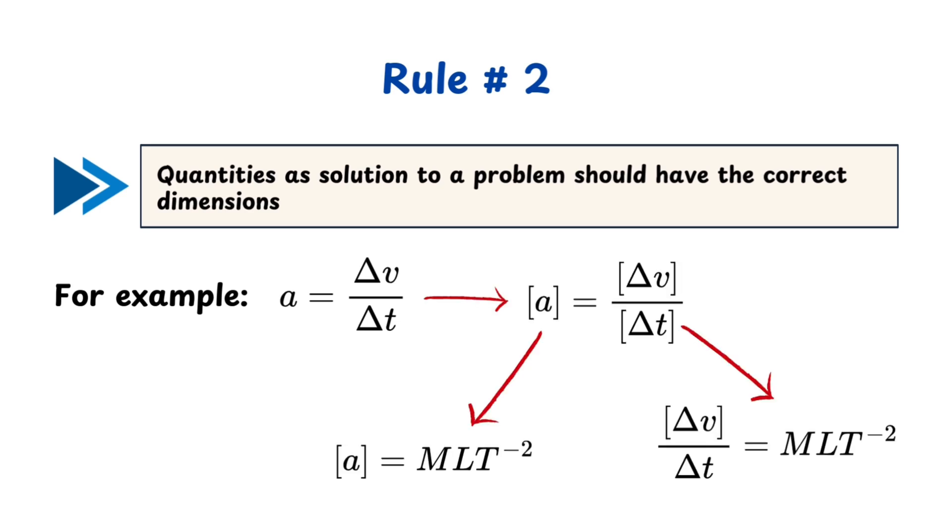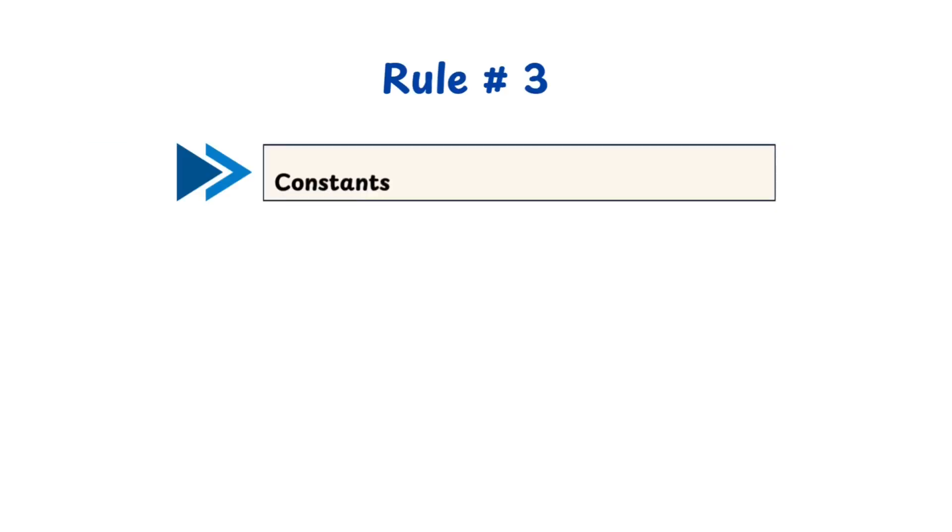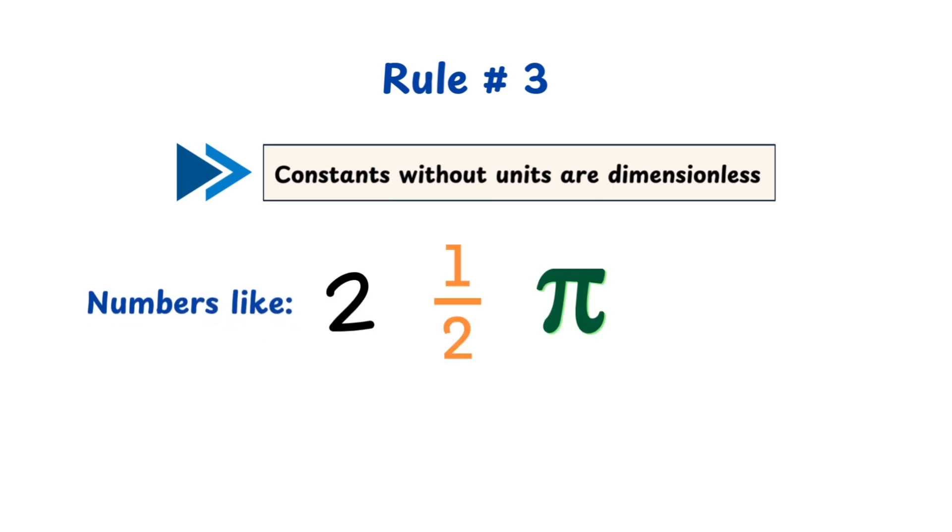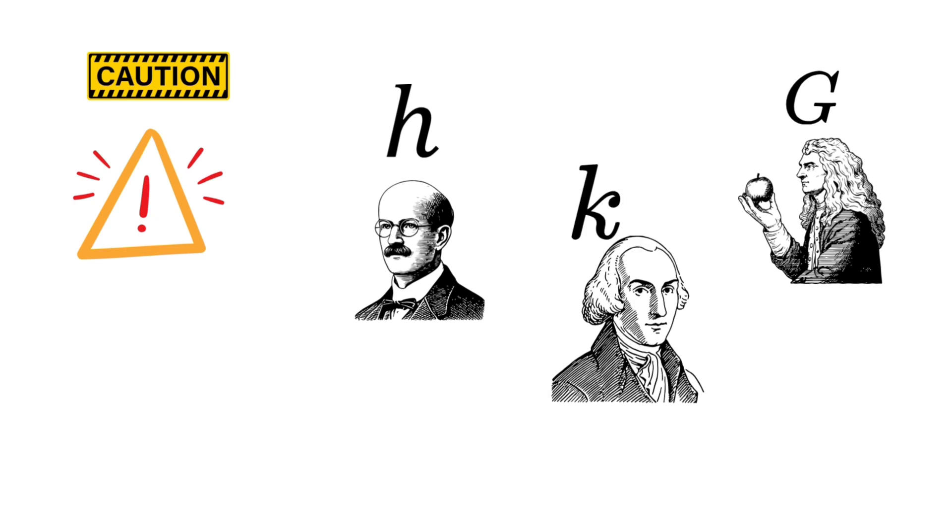Three: constants without units are dimensionless. Numbers like 2, 1/2, or pi do not carry dimensions, so they are treated as dimensionless. But you need to be careful here—not all constants are dimensionless. Some constants like Planck's constant, Newton's gravitational constant, the Coulomb constant, etc., all have dimensions and so must be treated as such.